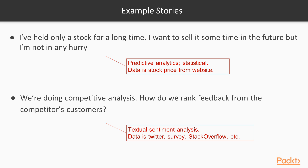Another case is competitive analysis: how do we rank the feedback from a competitor's customer? We don't have the ability to survey those customers because they're not our customers — they're actually using our competitor's product, so we can't just go out and ask them questions. We have to figure out how to get the data to answer this question. Some techniques we can use include text sentiment analysis, and we can get data from Twitter, third-party surveys, or Stack Overflow if it's in the technology domain. We can look for the presence or absence of feedback on a product relative to others, and check the sentiment of anything written.